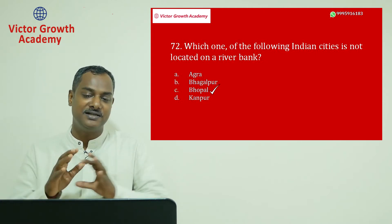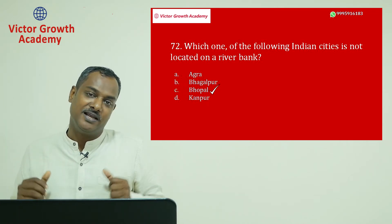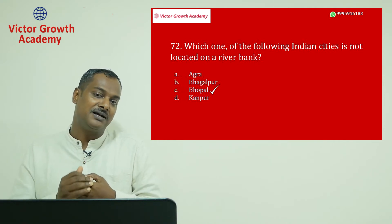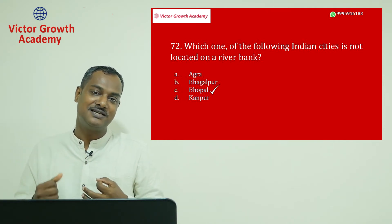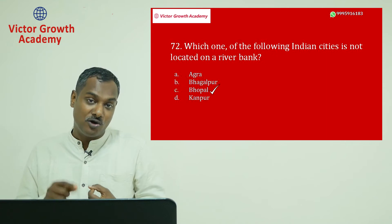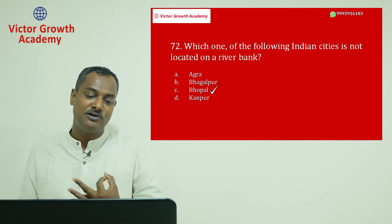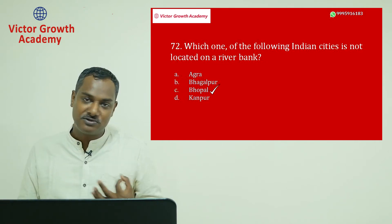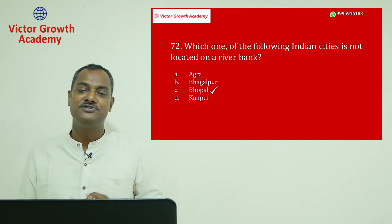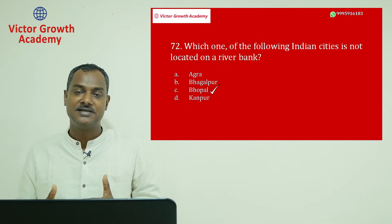Even with a negative marking scheme, you have to be brave and attempt questions — fortune favors the brave. Agra is eliminated; you now have three options. With some knowledge you can attempt. The trick in MCQs is not to leave many questions — attempt the maximum and eliminate as much as possible with the knowledge you have.